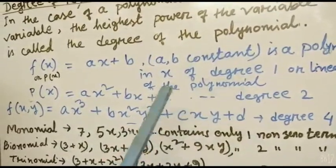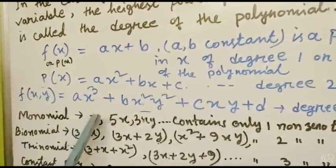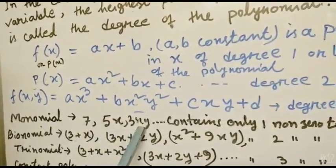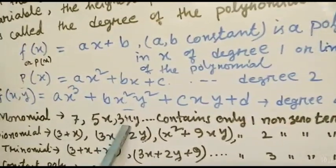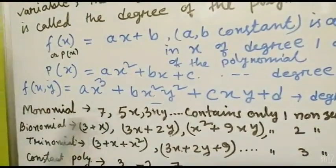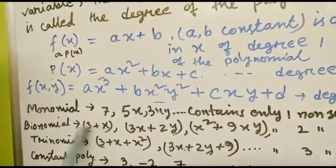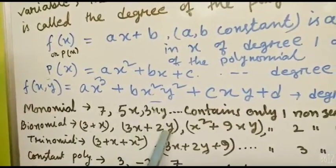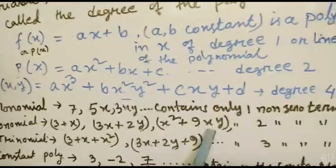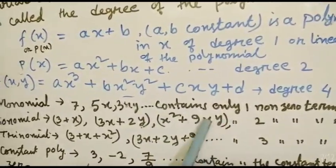Now, you know monomial — suppose one non-zero term: 7, 5x, 3xy contain only one non-zero term, so it is called a monomial. Similarly, binomial — 'bi' means 2. So binomial examples: 3 + 2, 3x + 2y, x² + 9x — these contain two non-zero terms. That is why they are called binomials.